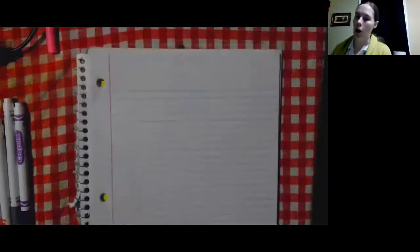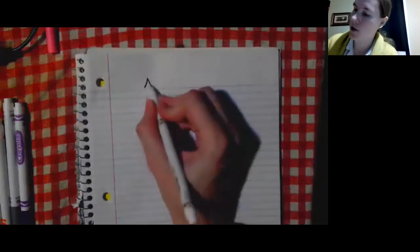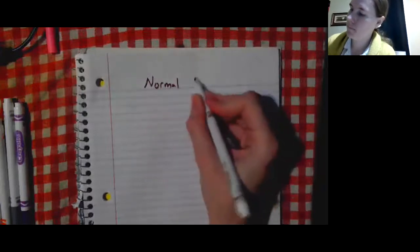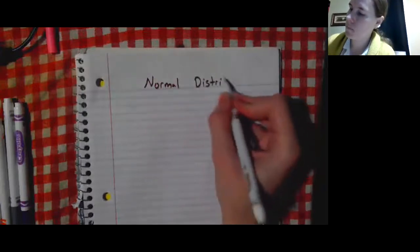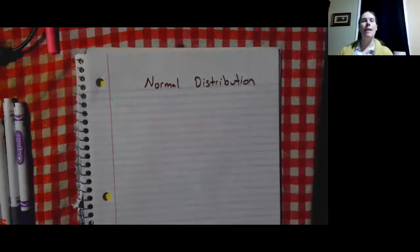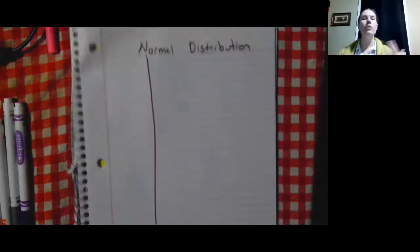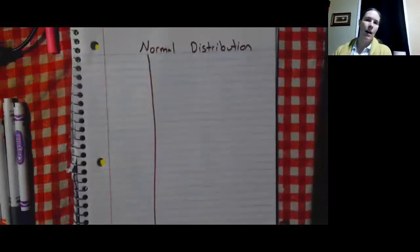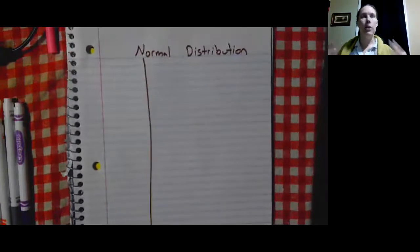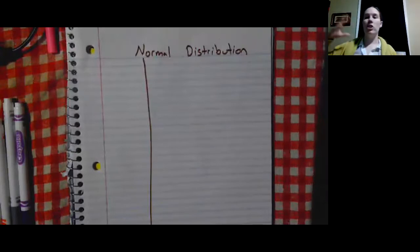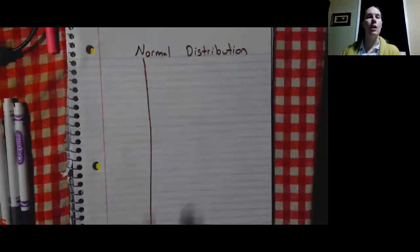Good morning. Today we're going to be taking notes on something called normal distribution. Normal distribution is a part of statistics that comes up whenever you talk about a set of data — things like test scores, average heights, weights, basketball stats. Normal distribution can come into play for all of those.